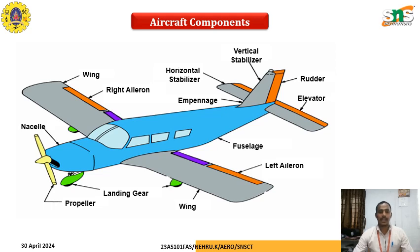The landing gear mostly operates as the undercarriage with wheels. The propeller-type engine helps to produce the thrust for this airplane. We have covered all the primary control surfaces: aileron, rudder, and elevator.